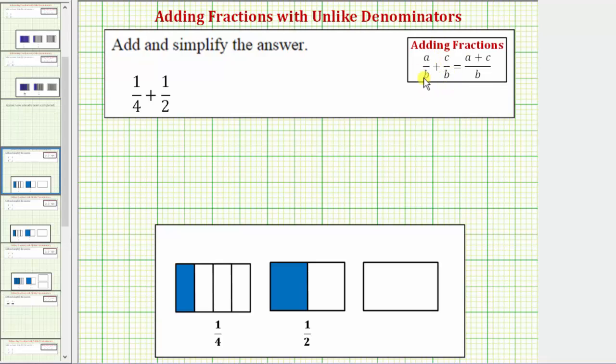Once we have a common denominator, to add two fractions, the denominator stays the same and we add the numerators. So looking at our example, we have 1 fourth plus 1 half. Notice how we do not have a common denominator and therefore we cannot add the fractions in this form.